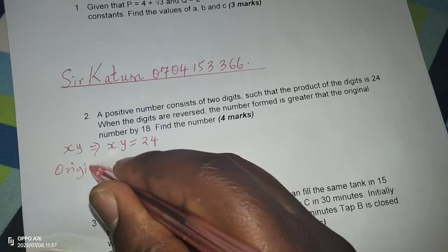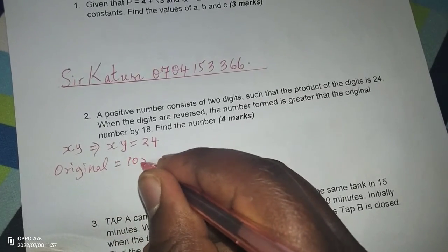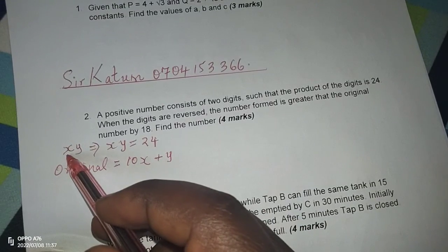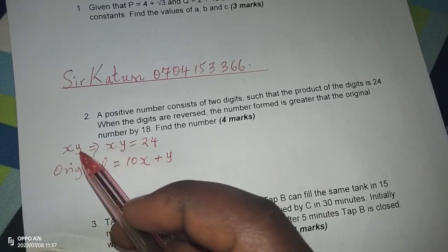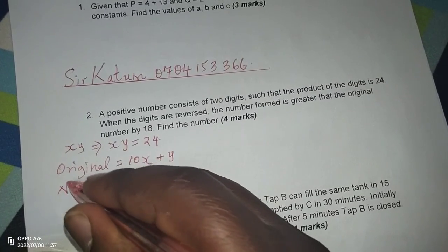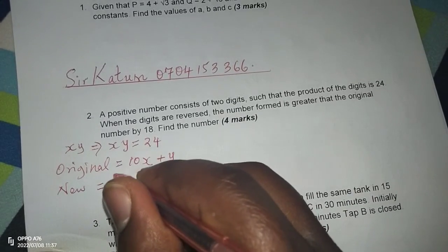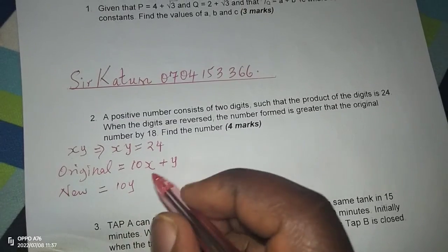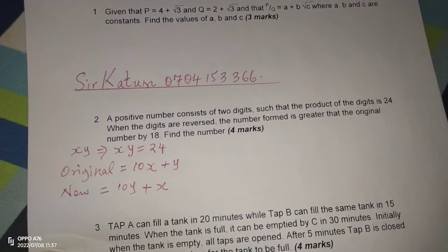So we are going to say the original number equals 10X plus Y because X is in the tens and Y is in ones. But now when reversed, the new number will have a total value of 10Y because Y takes the tens position, but X is in the ones position.